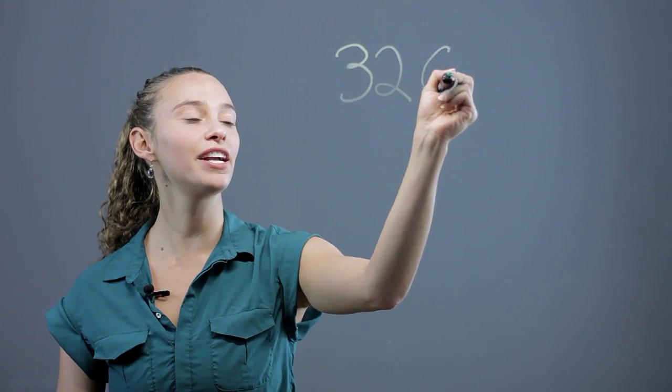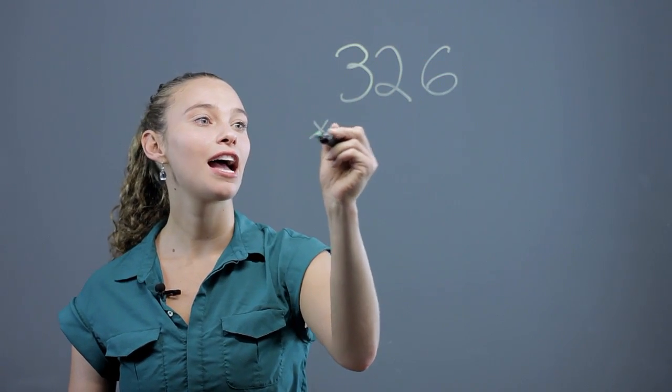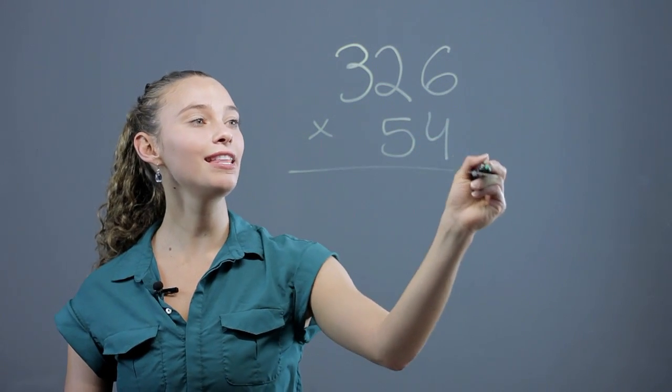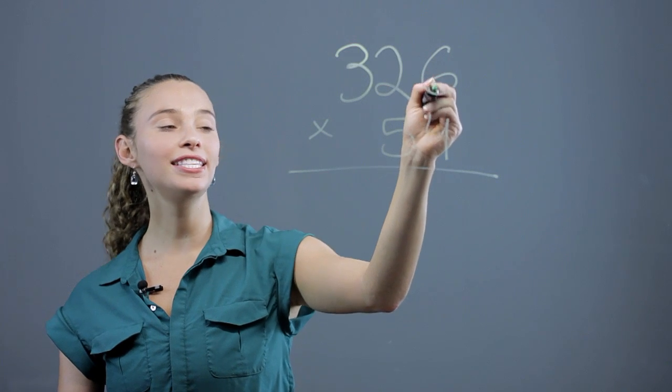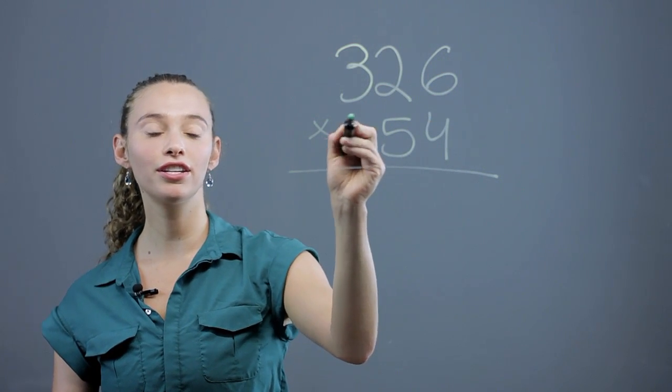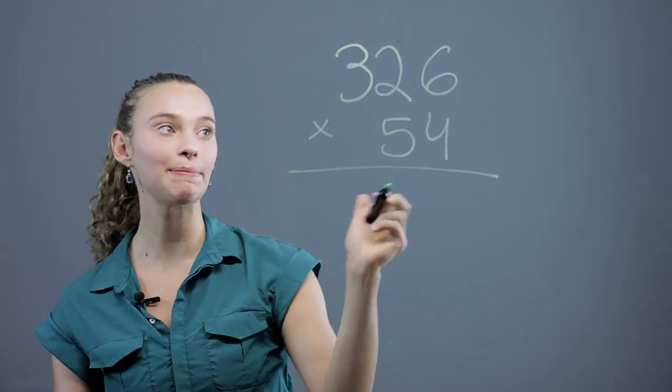So we have a number like 326 times 54. We line them up with the ones digit together. Even though there's no third digit here, that's okay, we just have blank space.